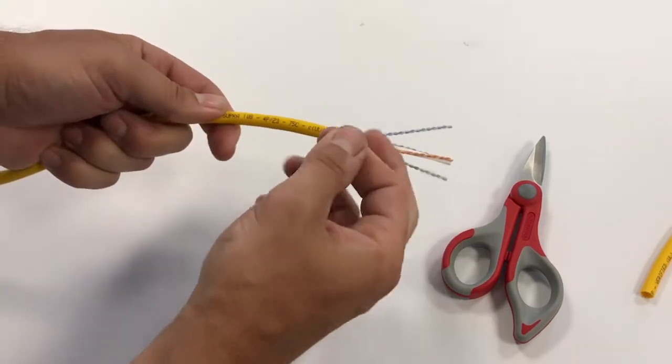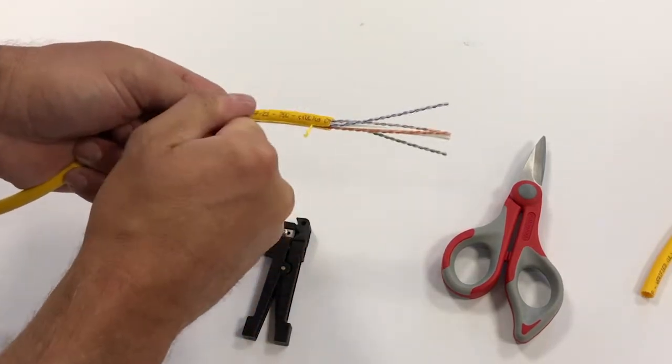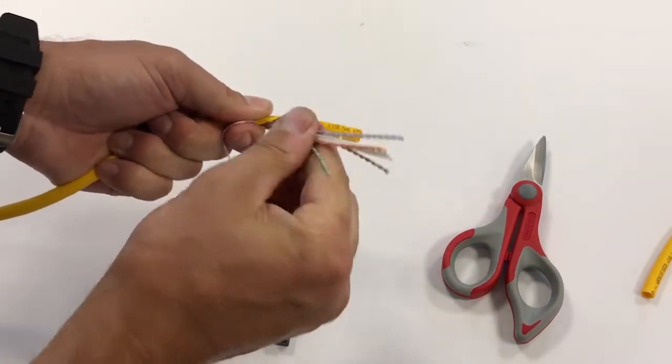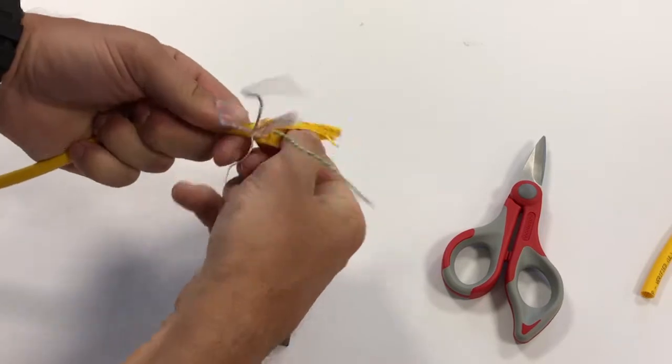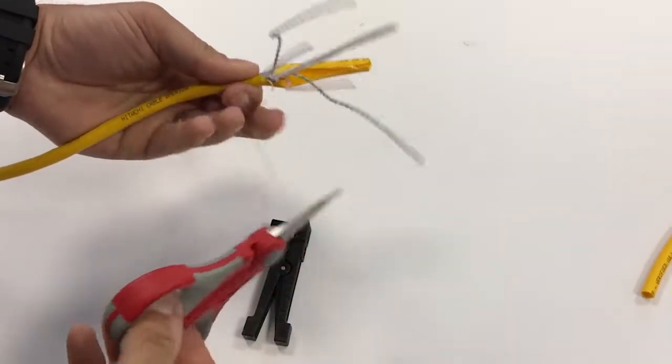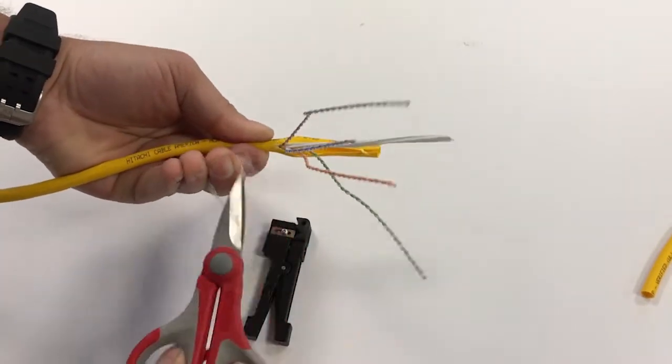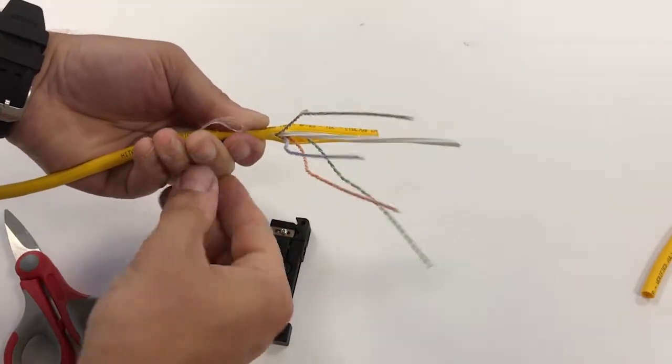So we'll take this nylon cord and pull it back to expose the inner core. We'll take our scissors and remove the ripcord.